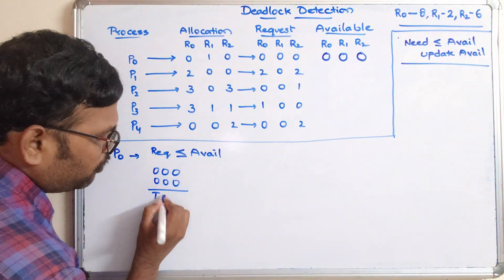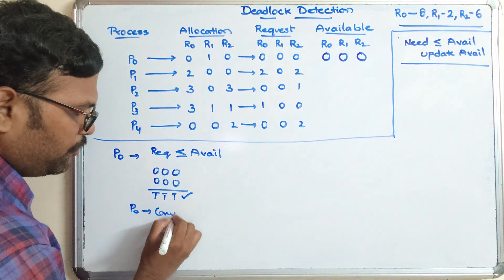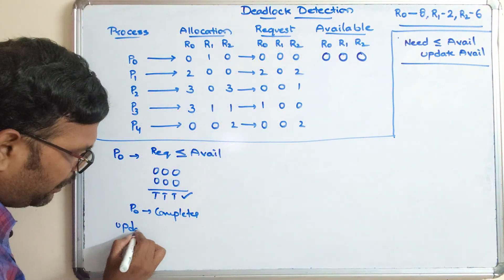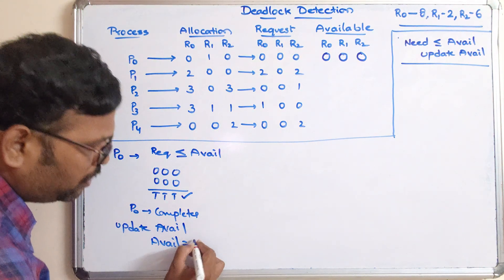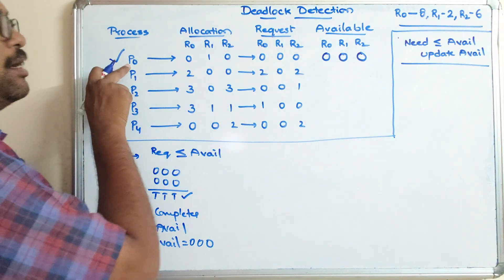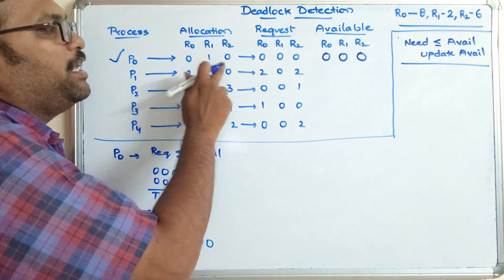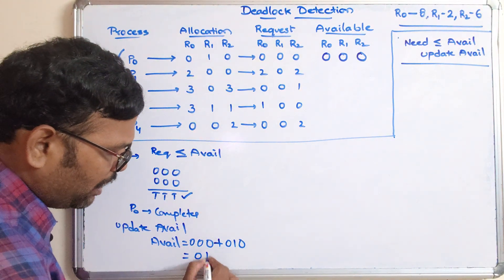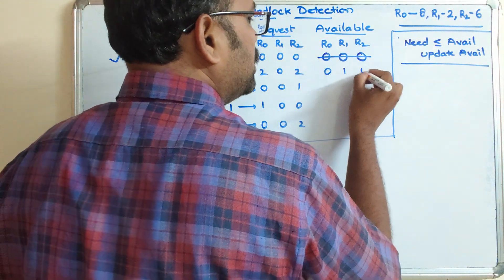Since all comparisons are true, P0 completes its execution. We then update available: available = available + allocation of P0. The previously available resources were 0,0,0, and P0's allocated resources are released, so the new availability becomes 0,1,0.